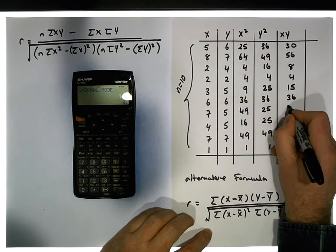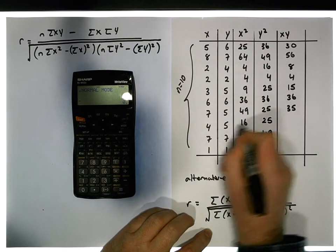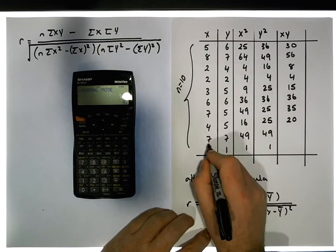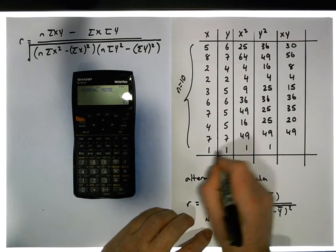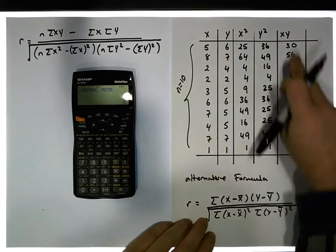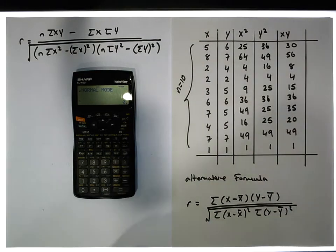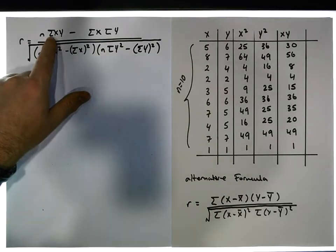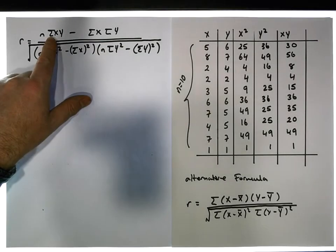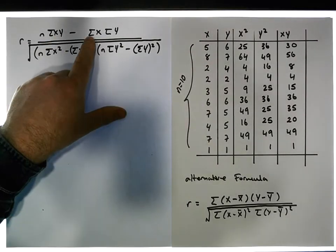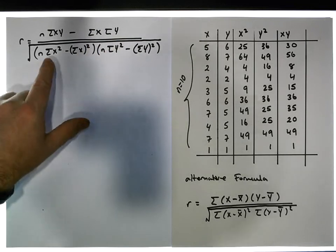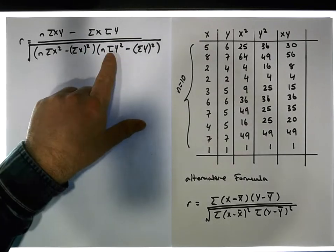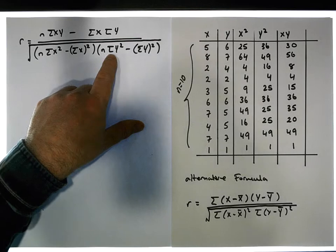Seven fives is 45, four fives is 20, seven sevens is 49, and one times one is one. So there are x, y terms. Now what I need is not just the x, y terms — I need the sum of the x, y terms for my formula. I need the sum of the x's, the sum of the y's, the sum of the x squared terms, the sum of the y squared terms — yes, that's important.